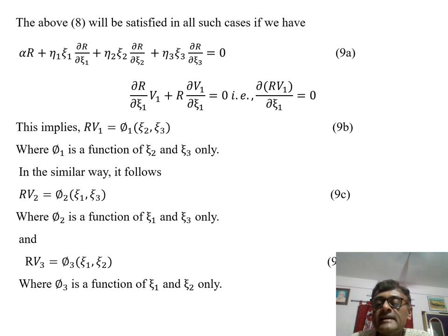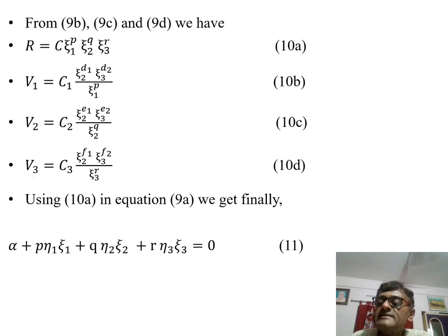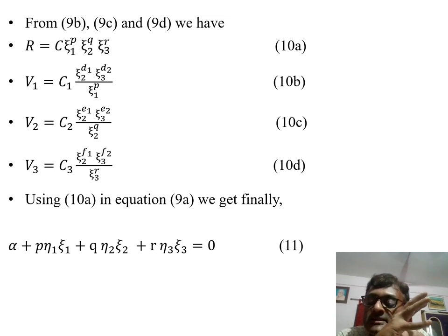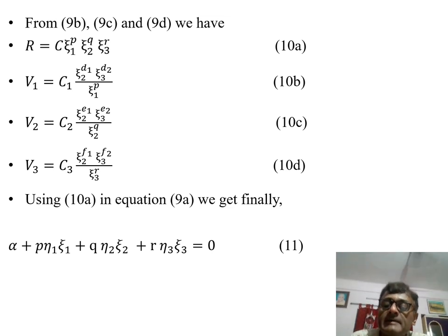If we believe that these are true, we can take one particular form of solution. I am not claiming this solution is the unique result or representation from the entire philosophy, but this is one of the possible solutions. If I suppose R as some C times xi1 to the power p, xi2 to the power q and xi3 to the power r, similarly for V1, V2, V3, these expressions are being taken. You can easily identify if you take the multiplication between R and V1, the xi1 expression is actually nullified. Similarly, if you take Rv2 expression, you will find that xi2 is not there.